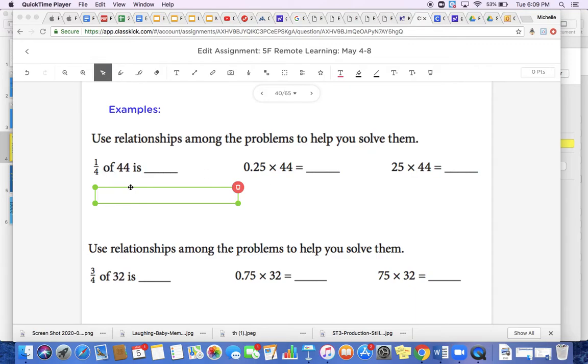So let's take a look at our first problem here. We have 1/4 of 44 is blank. Well, let's see all of these problems relate to each other. We've got 1/4 of 44 here, we've got 0.25 times 44 equals blank, and then we have 25 times 44 equals blank. So how do they relate?